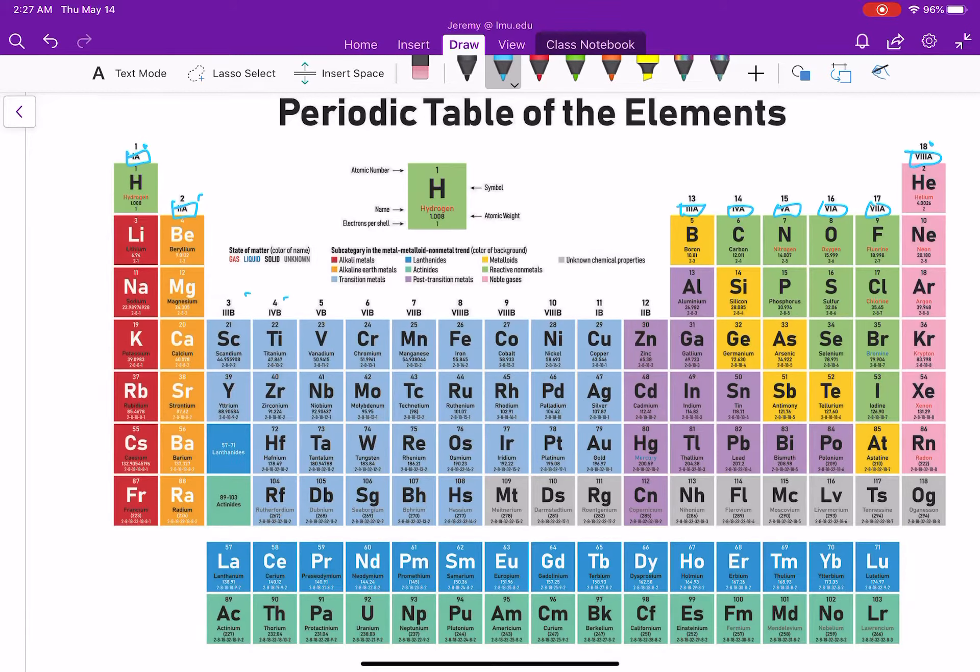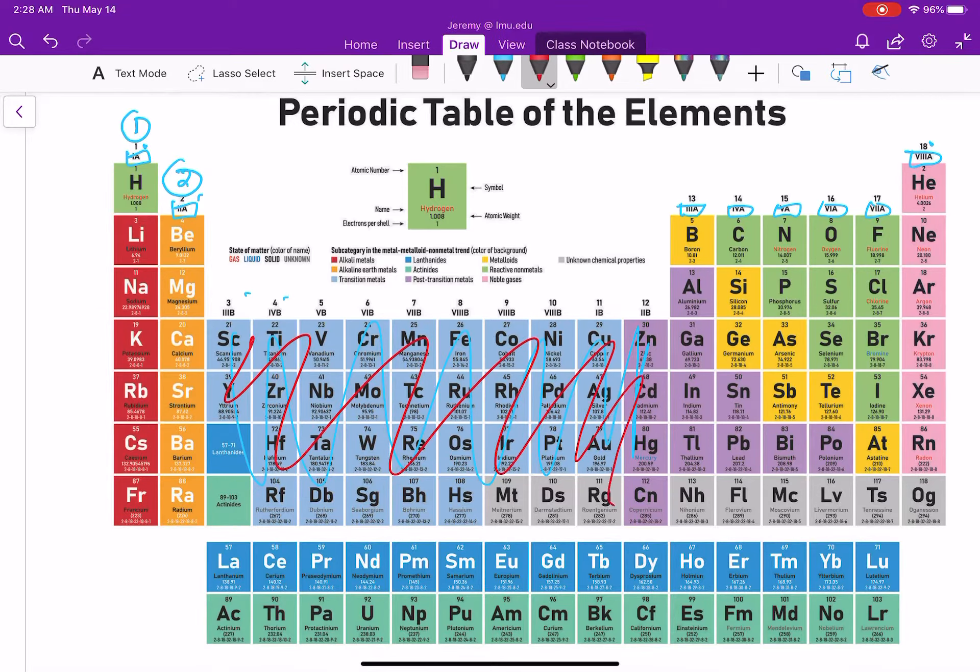And those are actually the numbers that we're going to be looking at because that tells you exactly how many valence electrons you have. So anything in this column has 1 valence electron. Anything in here has 2. In the middle here, we have all of our transition metals. And guess what? We don't really need to use those in organic chemistry. So we don't have to worry about those too much, which is great.